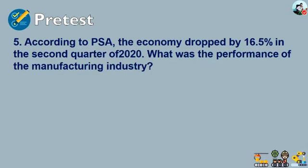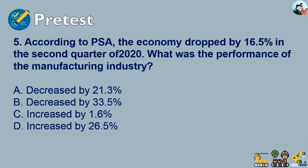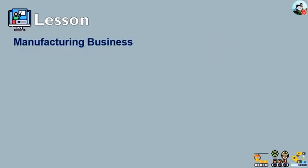Last question: according to PSA, the economy dropped by 16.5% in the second quarter of 2020. What was the performance of the manufacturing industry? A) decreased by 21.3%, B) decreased by 33.5%, C) increased by 1.6%, or D) increased by 26.5%. The right answer is letter A, decreased by 21.3%. Congratulations to those who got a perfect score on the pre-test. Now let's proceed to our formal lesson.